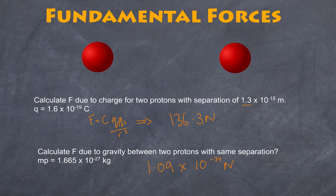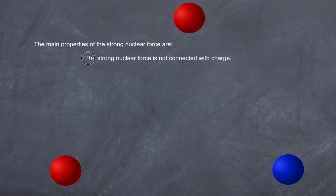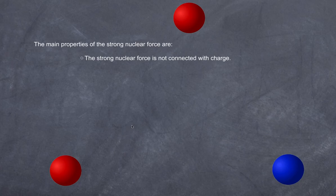So what force overcomes this strong repulsion? Gravity is clearly having no effect whatsoever. In the mid-1930s, after Chadwick's discovery of the neutron, an idea developed of a force existing within the nucleus that overcomes the electrostatic repulsion between protons — the strong nuclear force. Importantly, this force is not connected with charge. It acts equally between protons and protons, protons and neutrons, and neutrons and neutrons — collectively between all nucleons. There is no reference to charge here.